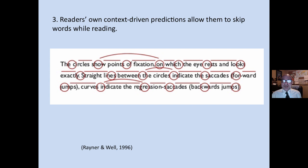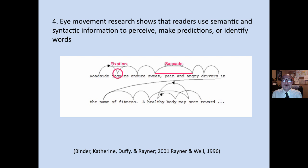Our brain simply fills in the blanks to make us seem like we have actually read every single word or perceived every one. So eye movement research shows that readers use semantic and syntactic information to perceive, make predictions, or identify words during the act of reading whole complete texts.